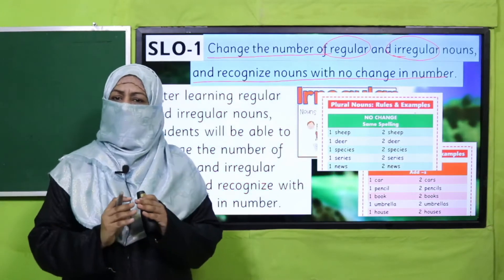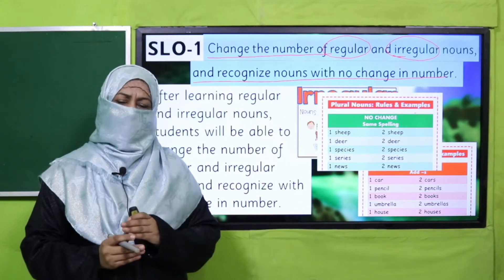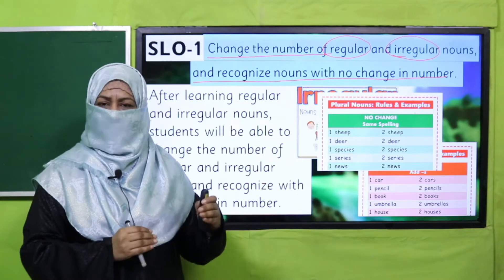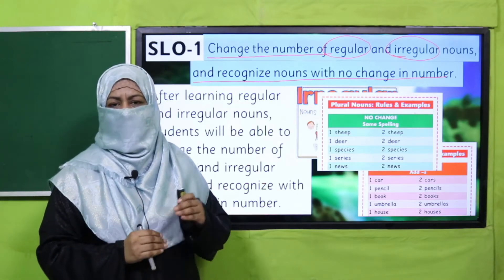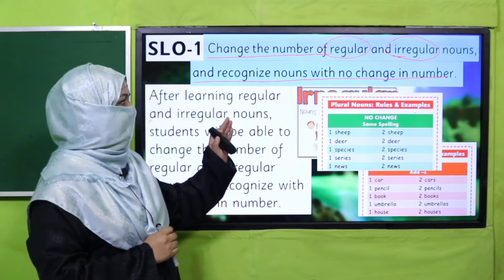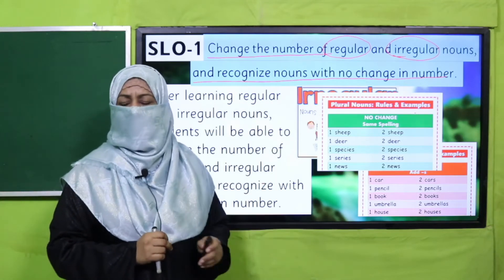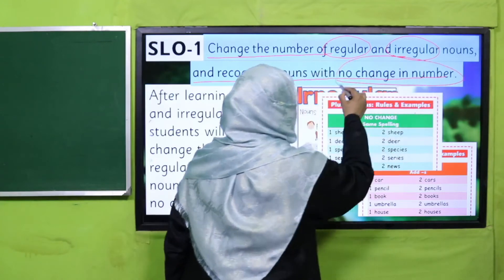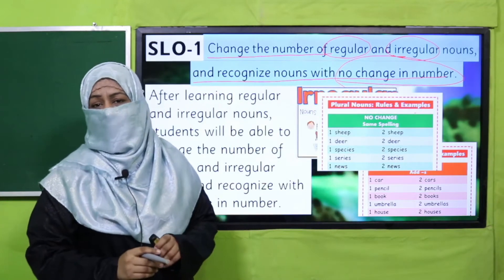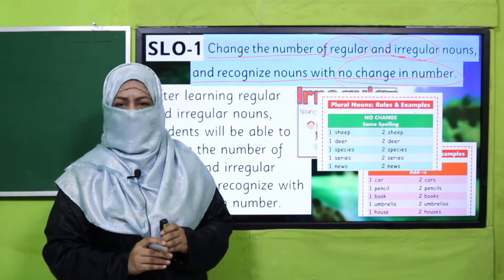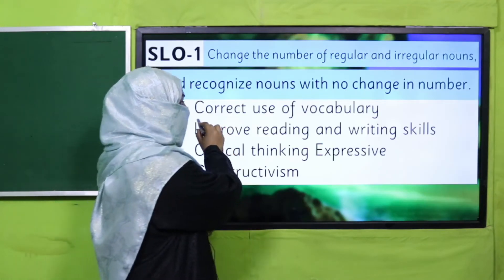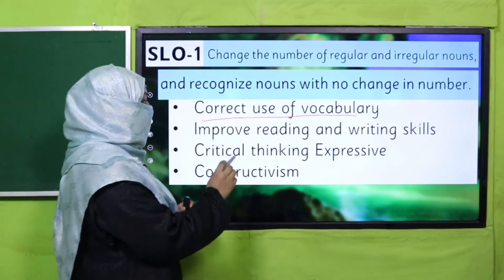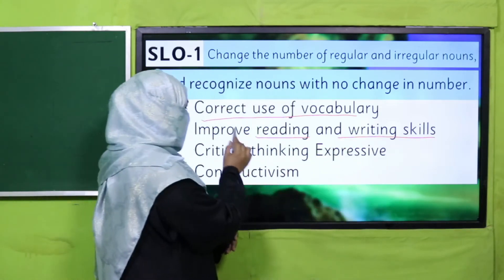Dear parents, we start giving children the concept of singular and plural from an early age, and we gradually enhance it as the difficulty level increases. Now the children will understand regular and irregular nouns, as well as those nouns whose singular and plural forms are the same — meaning we use the same noun for both. In this way, children's vocabulary increases.